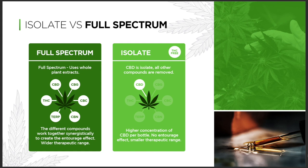Your body already has an endocannabinoid system in it. When you take the full spectrum oil, you produce the entourage effect — it activates trillions of receptors in your body. Incredible, right?